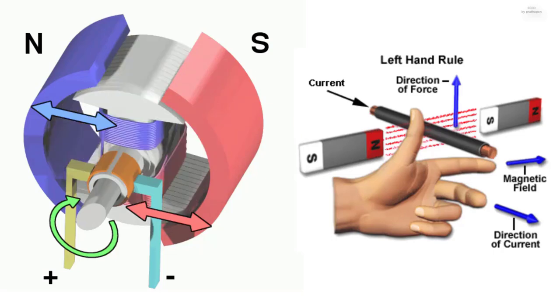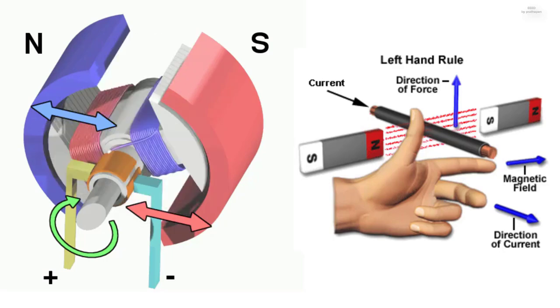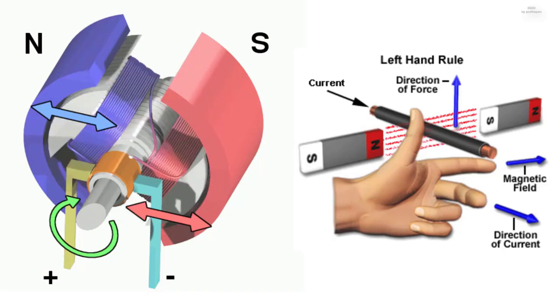Second variant: The thumb represents the direction of motion resulting from the force on the conductor. The first finger represents the direction of the magnetic field. The second finger represents the direction of the current.